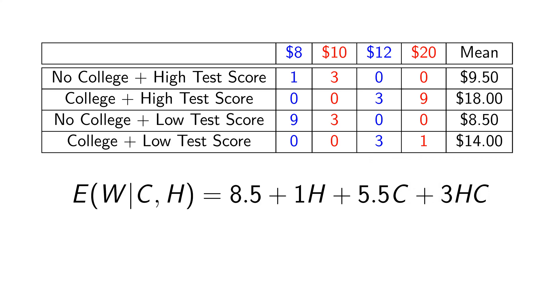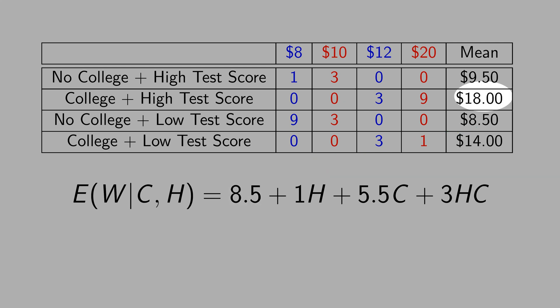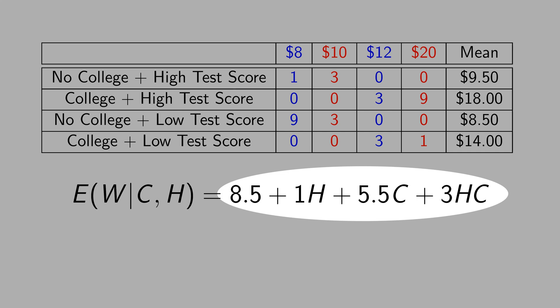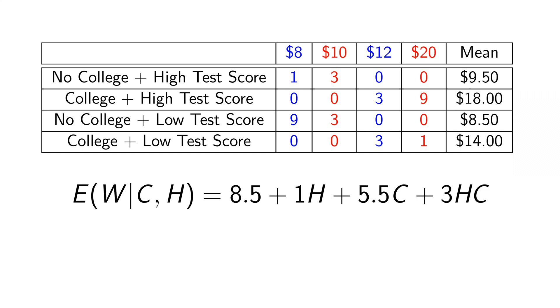Now let's run a regression with the variable h and the interaction between college and the high mark test h. The intercept is 8.5 — it represents people with no college and the low test score. For example, how can you get $18? That is the category college with high test score. Put one for each dummy variable in the equation and sum up all the slopes: 8.5 plus 1 plus 5.5 plus 3 equals 18. But the question is, how do we calculate the average causal effect? That originally we got $7.